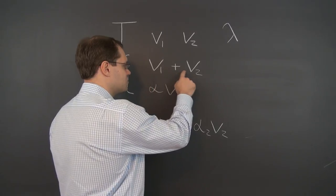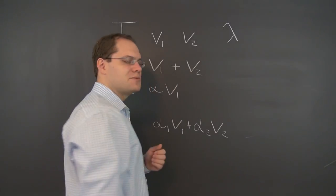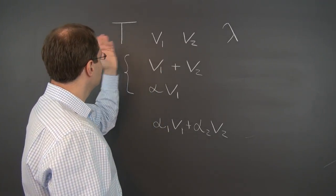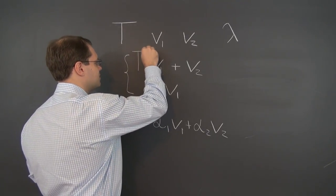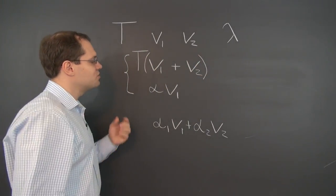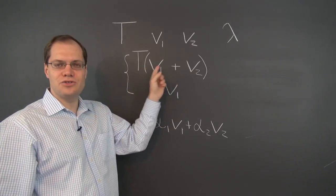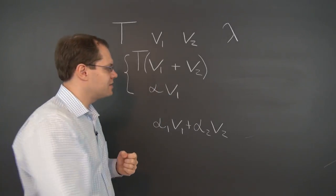Well, what we have to do is to show that this is an eigenvector that also corresponds to the eigenvalue lambda. So to show that it's an eigenvector of the linear transformation T, all we can really do is apply the transformation T to the sum. And because this transformation is linear, it will be applied to V1 and V2 individually, and then the two will be added together.